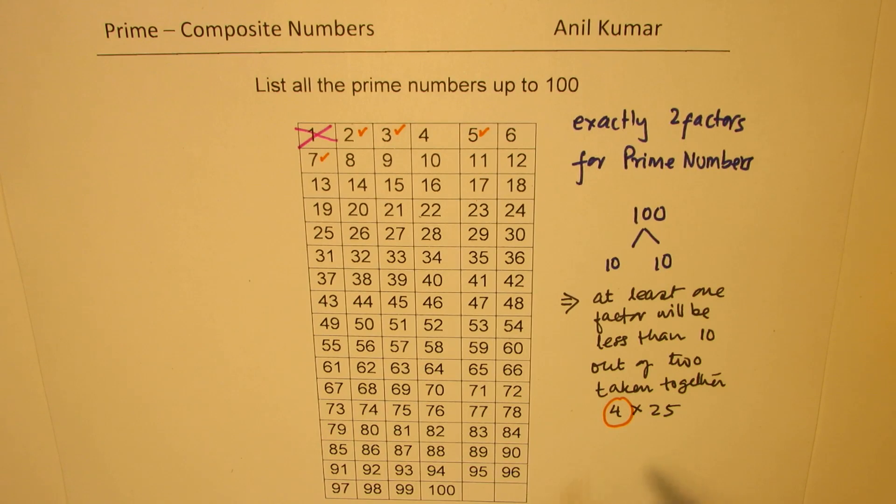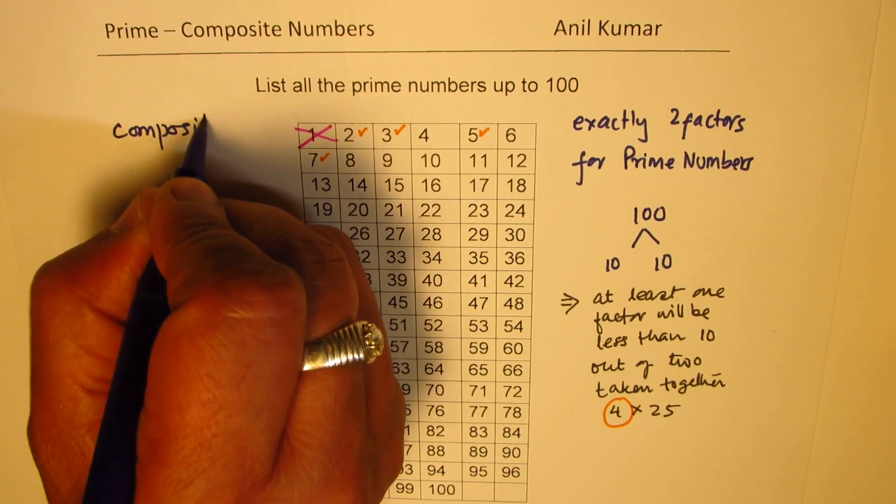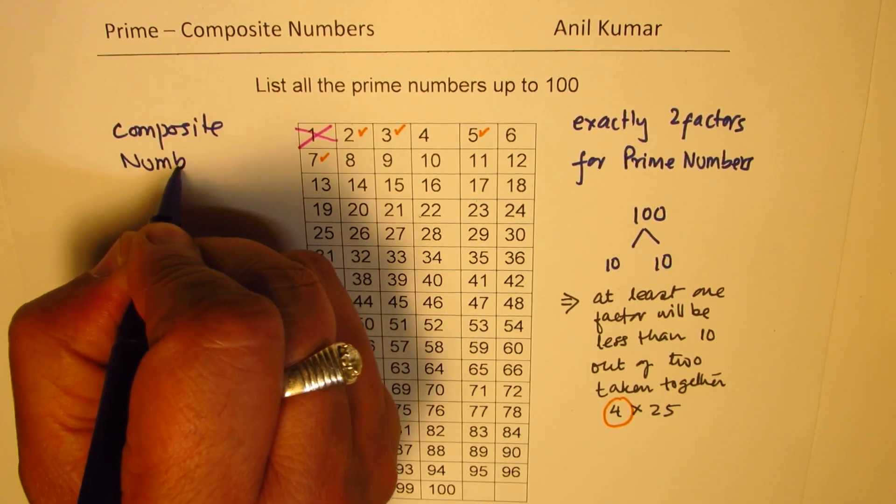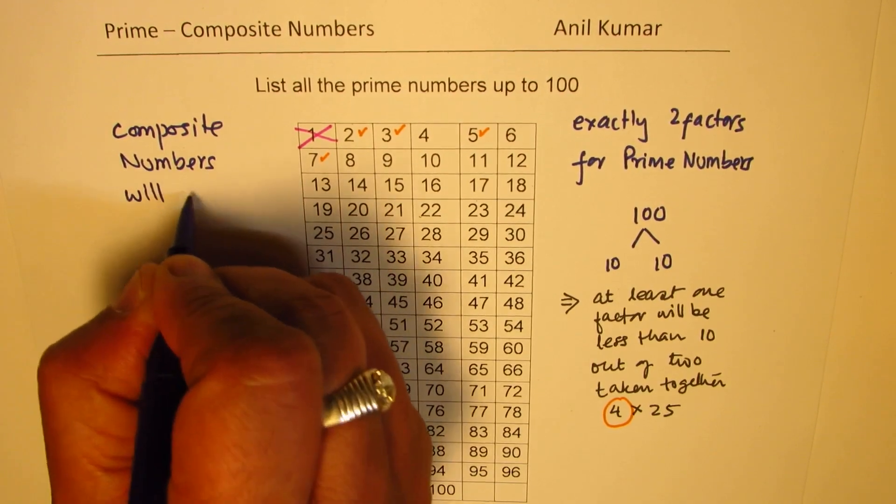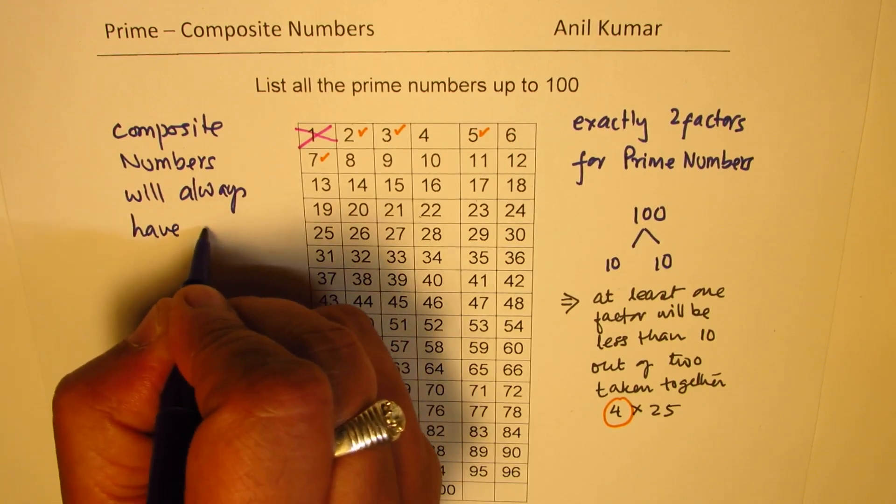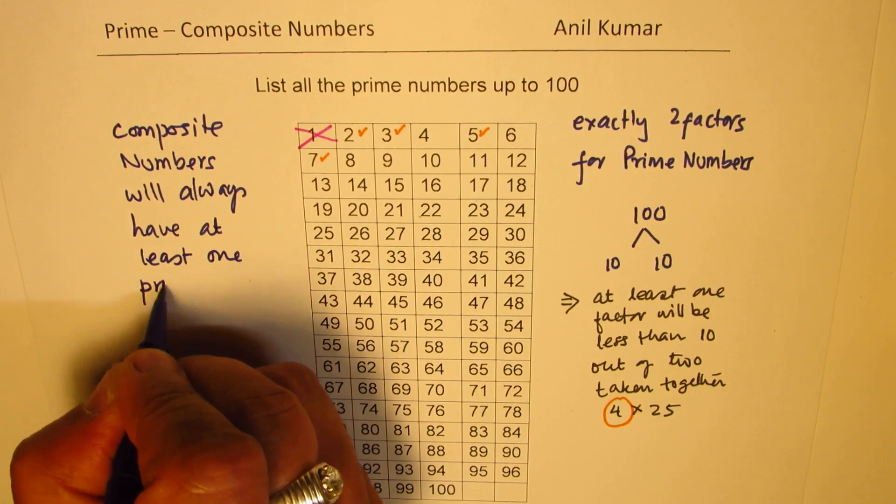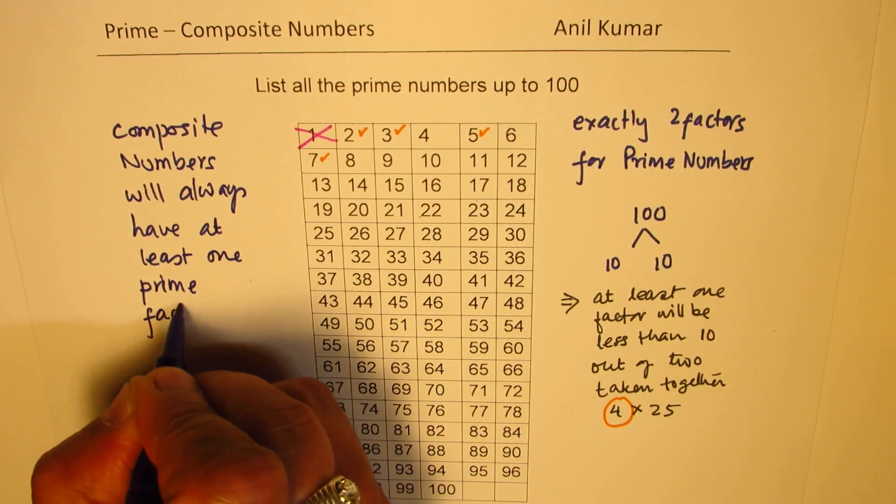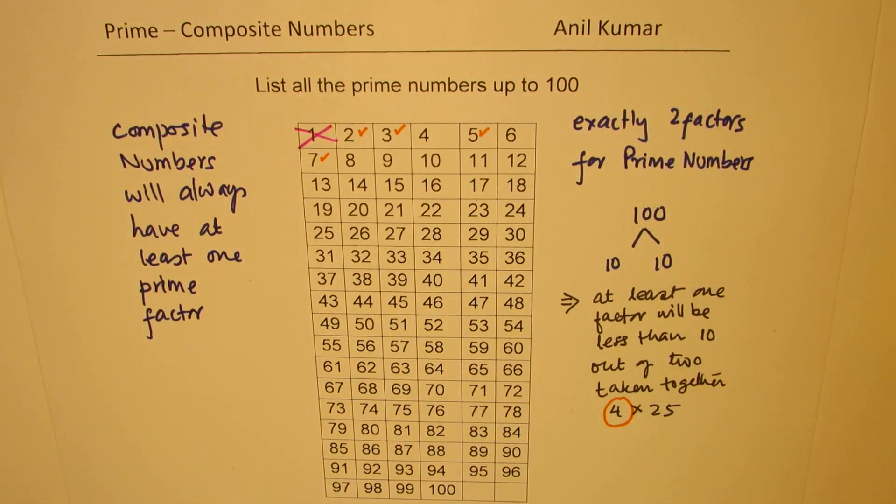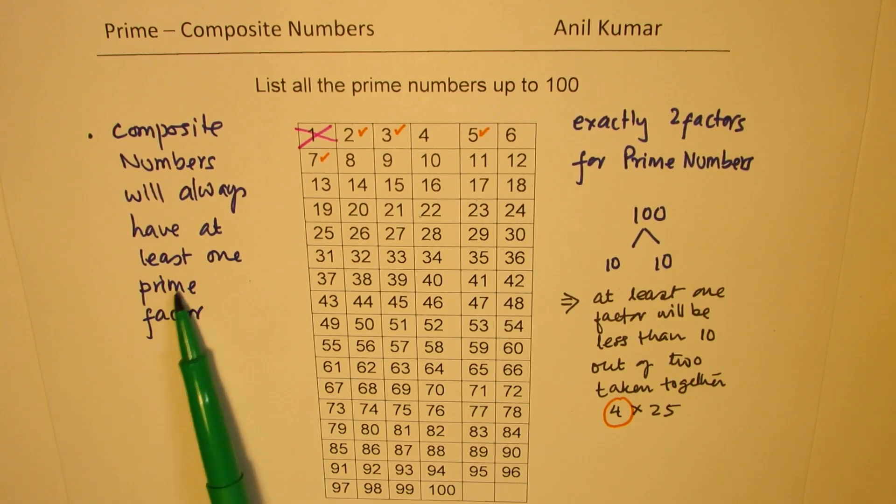Now, another important thing to remember here is that composite numbers will always have at least one prime factor. So this is also very important to understand. So let's be very clear. Composite numbers have more than two factors. And the important part is that composite numbers will always have at least one prime factor.